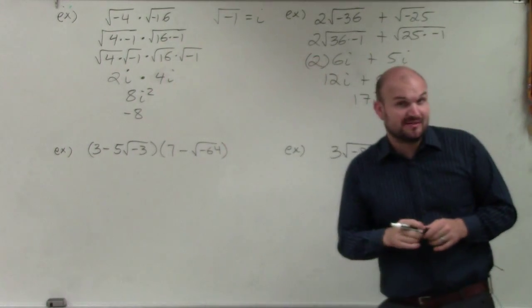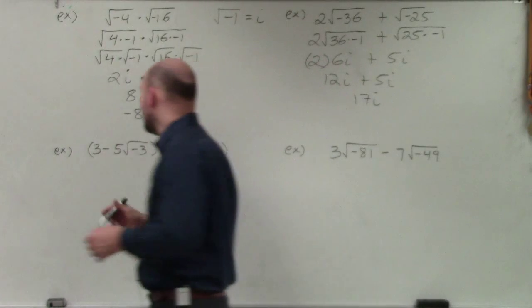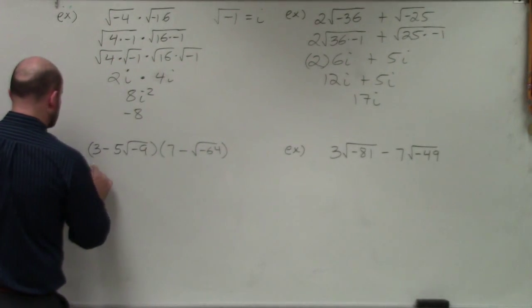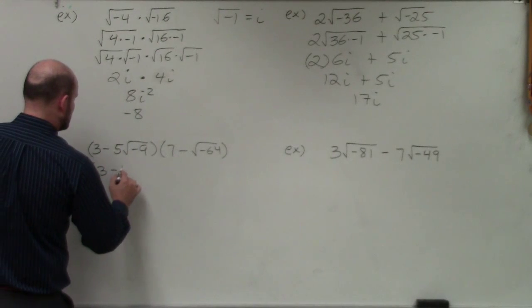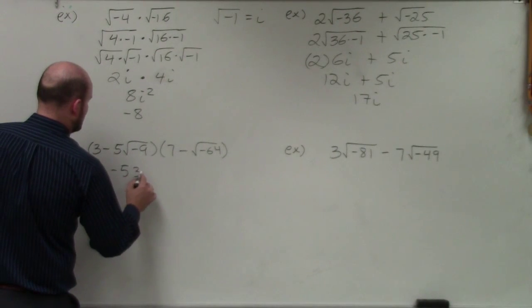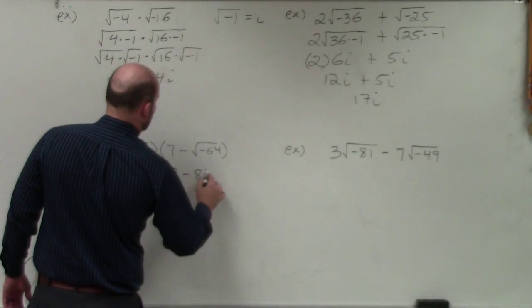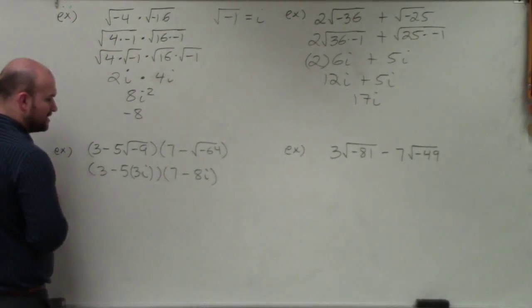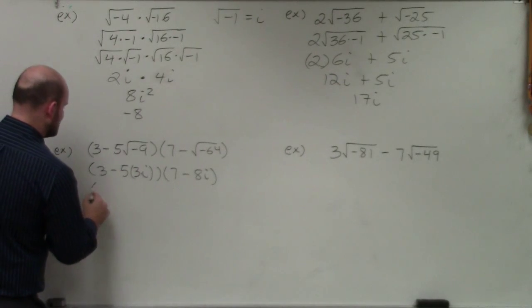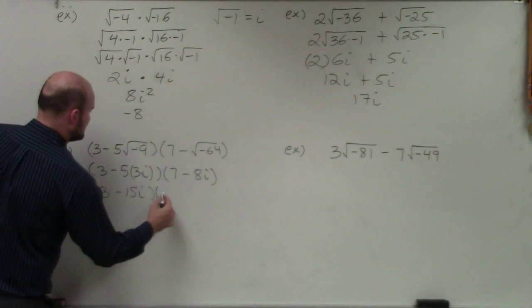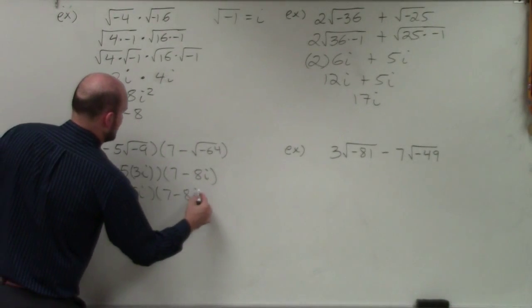Over here, I have a binomial times a binomial, but I'm going to simplify this first. When I simplify, I have 3 minus 5 times 3i, times 7 minus 8i. Following the same process, this simplifies to 3 minus 15i, times 7 minus 8i.